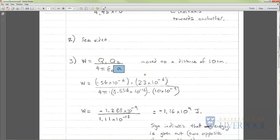We put this distance of 10 nanometers in because that's going to be the distance between them after we've moved them. That's 10 times 10 to the minus 9. Put your values in. You get negative 1.288 times 10 to the minus 9 over 1.11 times 10 to the minus 18, and when you work that out, you get minus 1.16 times 10 to the 9 joules. Remember your units—that's important.